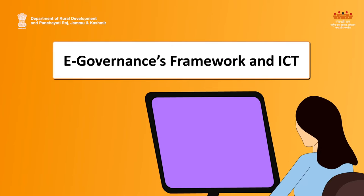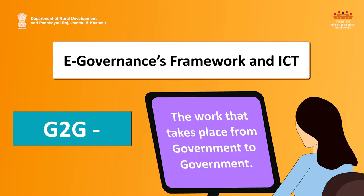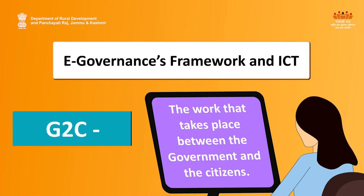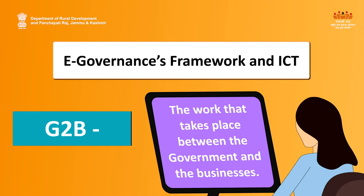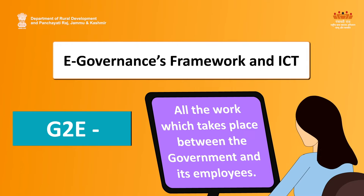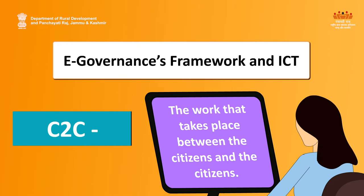E-Governance Framework and Information Communication Technology: G2G — the work that takes place from government to government; G2C — the work that takes place between the government and the citizens; G2B — the work that takes place between the government and the businesses; G2E — all the work which takes place between the government and its employees; C2C — the work that takes place between the citizens and the citizens.